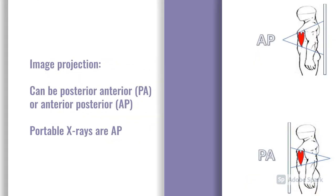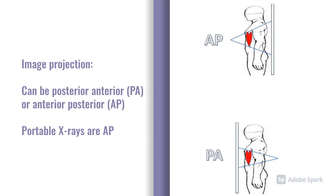The other thing to check with the technical details is the image projection. There's a difference in how the radiographer will take the x-ray, depending on whether the x-ray beam is coming anteriorly to posteriorly or posteriorly to anteriorly. The gold standard is a PA x-ray, whereas the AP distorts — particularly the heart — making it appear bigger. Also note whether x-rays are portable or whether they're erect, semi-erect or supine, as that gives you additional information about the patient's state.